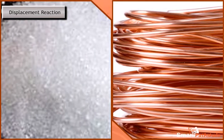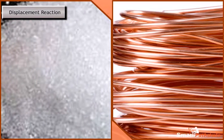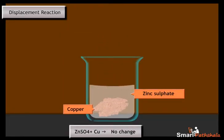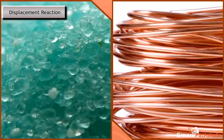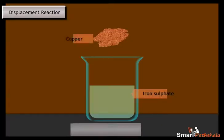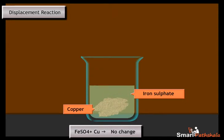However, when we perform the same experiment with zinc sulphate and copper, copper will not be able to displace the zinc from the zinc sulphate. The reason behind this is that zinc is more reactive than copper. Similarly, when we perform the same experiment with iron sulphate and copper, copper will not be able to displace the iron from the iron sulphate because iron is more reactive than copper.